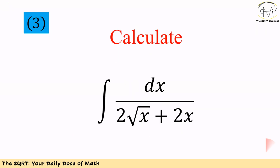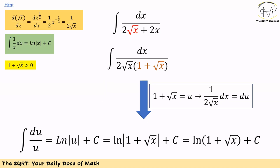Now let's focus on the third problem. We need to find the integral of dx over 2 times the square root of x plus 2x. To calculate this, we are going to factor out 1 square root of x in the denominator, giving us 2 times square root of x times 1 plus square root of x. Now if we replace 1 plus square root of x with a new variable u, then taking the derivative from both sides, we get 1 over 2 square root of x dx equals du.